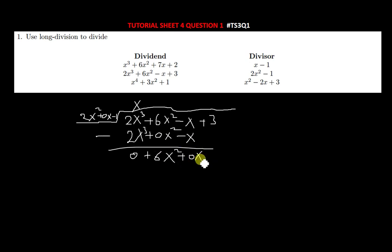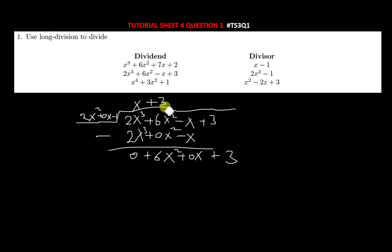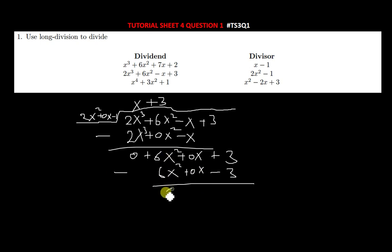Bring down the terms and divide 2x² into 6x² to get positive 3. Bring down the 3. Multiply: 3 times 2x² gives 6x²; 3 times 0x gives 0; 3 times −1 gives −3. Subtract: 6x² − 6x² = 0; the x terms cancel; 3 − (−3) gives a remainder of positive 6.